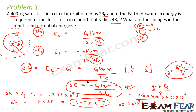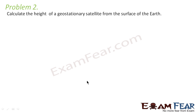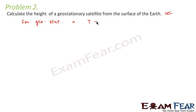Let us go ahead and look at another numerical. Calculate the height of a geostationary satellite from the surface of the earth — a very general problem. For any geostationary satellite, the time period is equal to 24 hours, that is 24×60×60 seconds = 86,400 seconds.